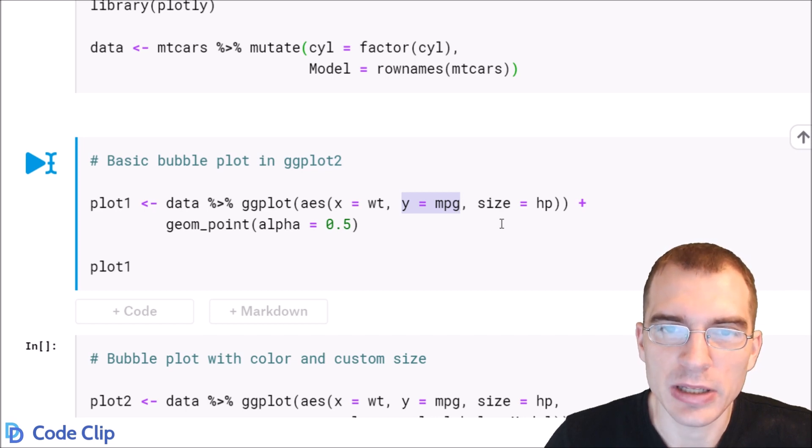Then we're going to add a third aesthetic to make the size of the bubbles or the points, so we're going to set size equal to horsepower, and then we're just going to plot geom_point like we would for a scatter plot.